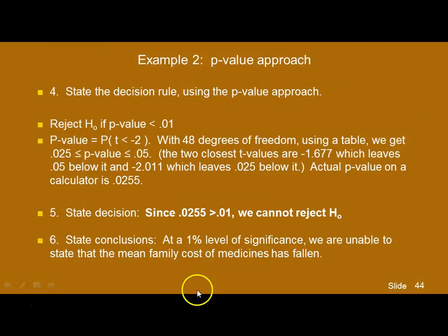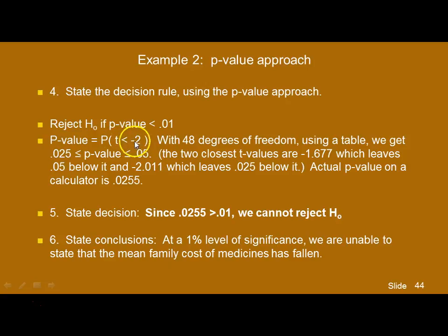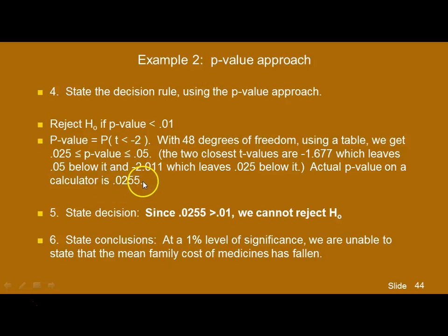Using the P-value approach, the decision rule is to reject the null if the P-value is less than alpha — in this case, less than 0.01. Since this is a left-sided test, we want to find the probability that the T value is less than negative 2. With 48 degrees of freedom, the two closest T values in the table are negative 1.677, which leaves a probability of 0.05 below it, and negative 2.011, which leaves 0.025 below it. So the P-value is somewhere between 0.025 and 0.05. On a calculator, the actual value is 0.0255.